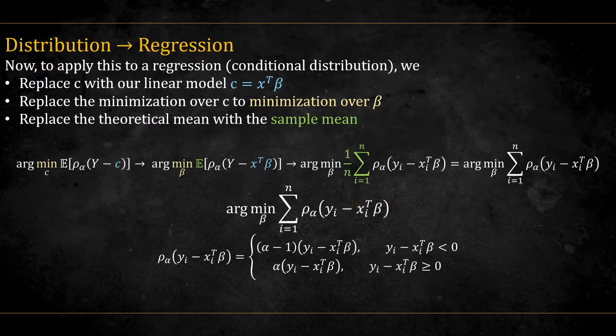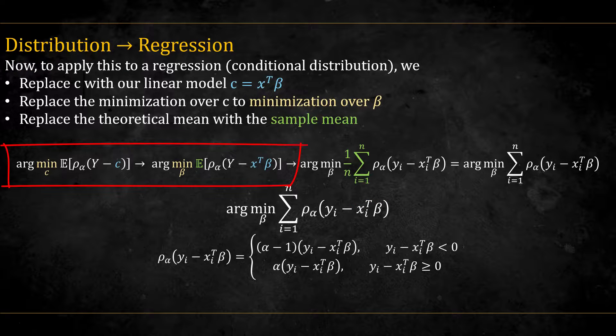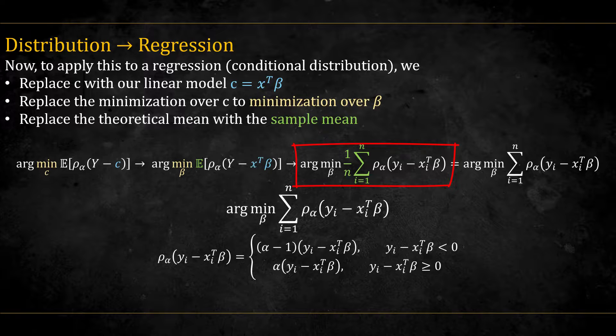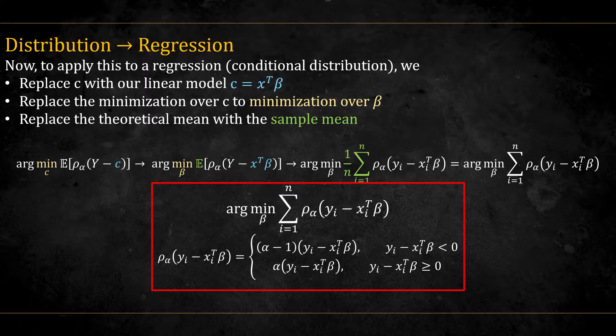Now to apply this to a regression, we replace c with the linear model and the minimization over c to minimization over beta, and we replace the theoretical mean with the sample mean. Notice that the 1 over m constant is not important for optimization sakes, so we can discard it. And this is our final loss, the quantile loss.